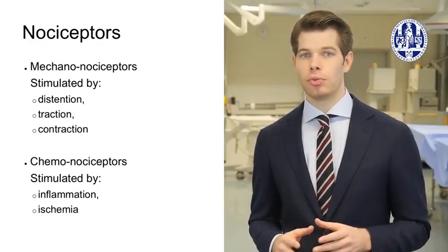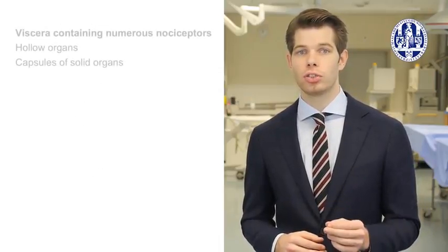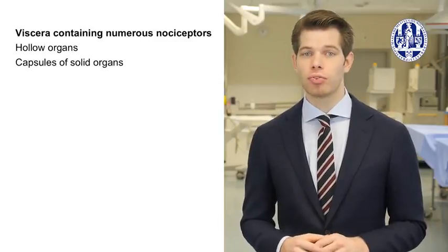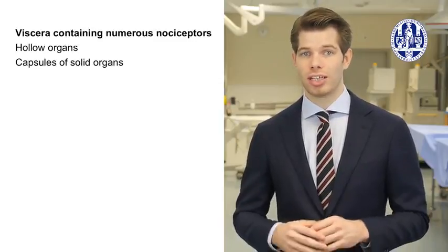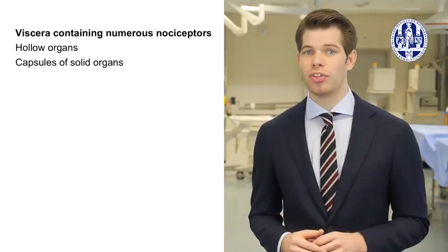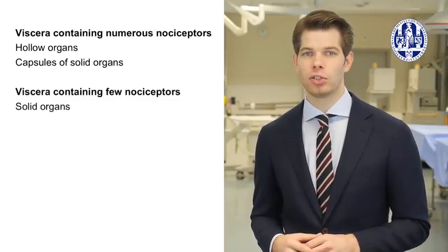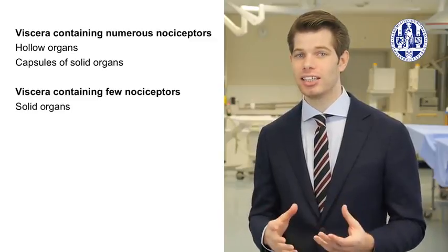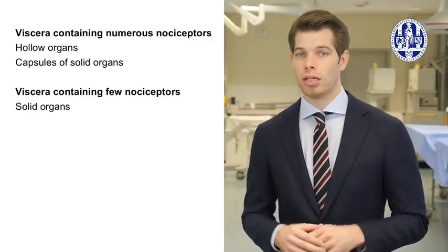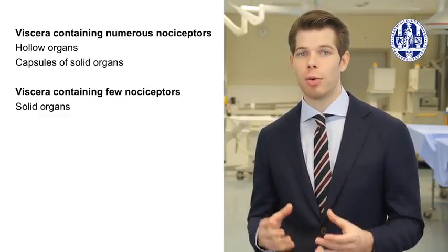The distribution of nociceptors among the abdominal organs is not equal. Hollow organs such as the intestine, ureter and bile duct contain considerable amounts of nociceptors. The capsules of solid organs such as the liver contain nociceptors as well. Solid organs themselves, however, such as the liver, spleen and kidneys, hardly contain any nociceptor innervation. This explains why injury to these organs often does not result in abdominal pain.